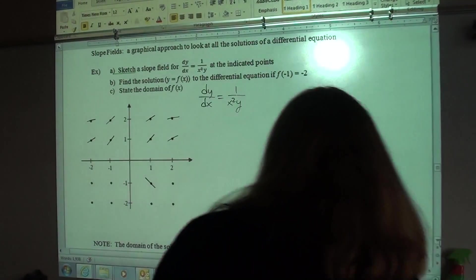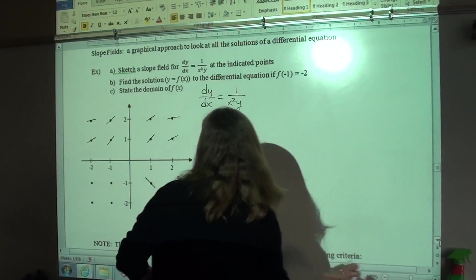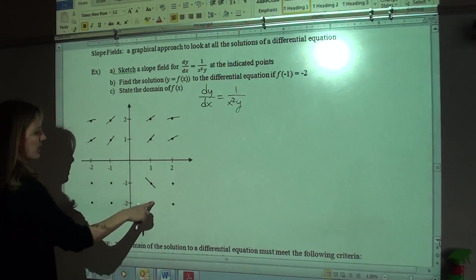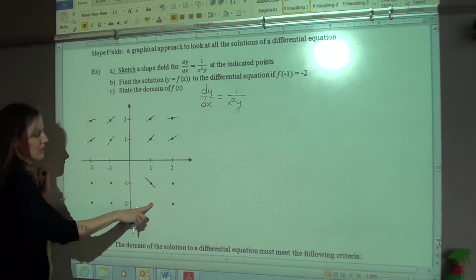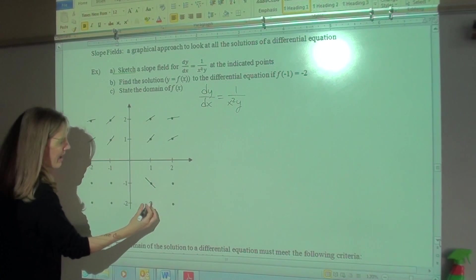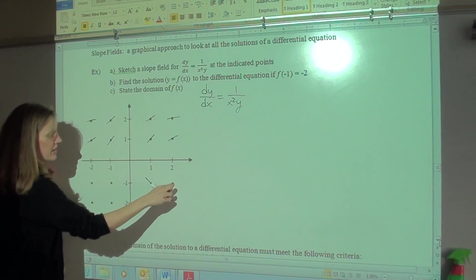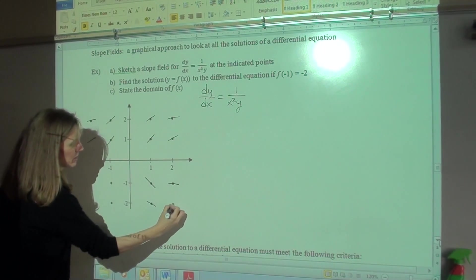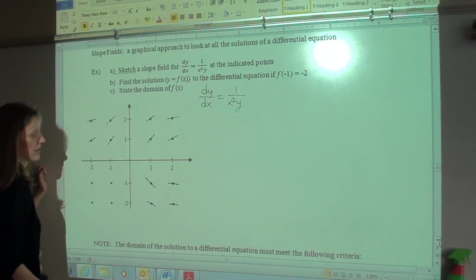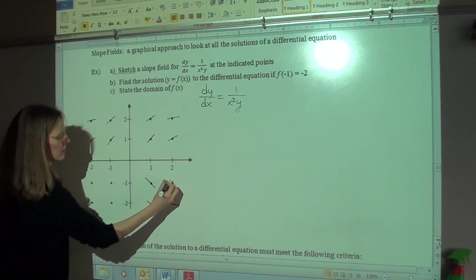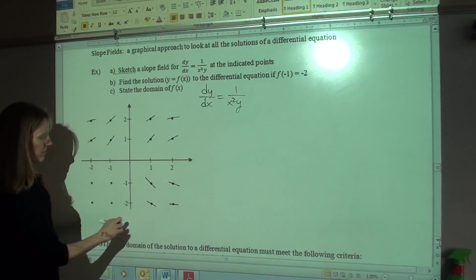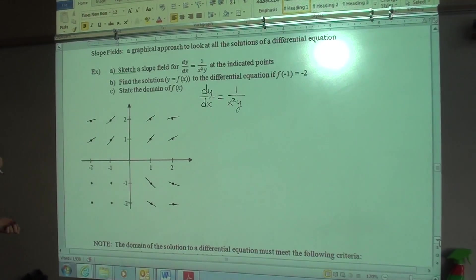Okay, continuing on. If x is 1 and y is negative 2, we get a slope of negative 1 half. Then here we're at negative 1 fourth, and then here we're at negative 1 eighth. It's not great, but it should be a little bit, a tiny bit steep. Something like that. Good enough.